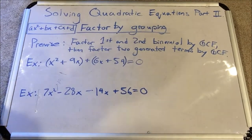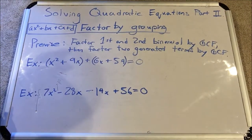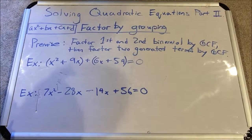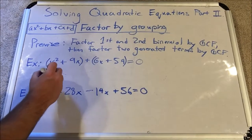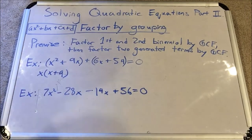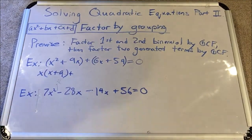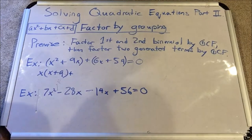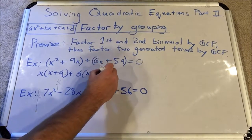We factor the first binomial by GCF: what can I divide out of both x² and 9x? I can divide out an x — they both share at most an x factor — so I have x times (x + 9). In the second binomial, the largest factor that 6 and 54 share is 6, since 6 goes into 54 nine times. So I pull out a 6 and get (x + 9).